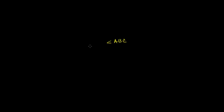Let's say I have an angle ABC and it looks something like this. Its vertex is going to be at B. Maybe A sits right over here and C sits right over there.